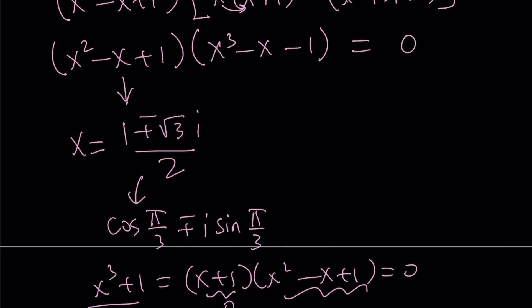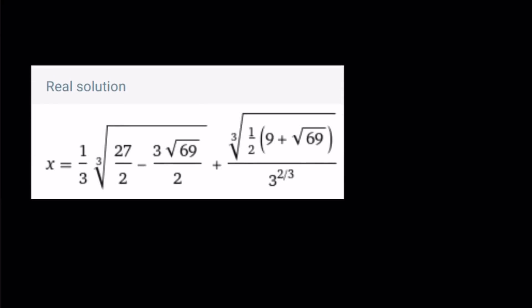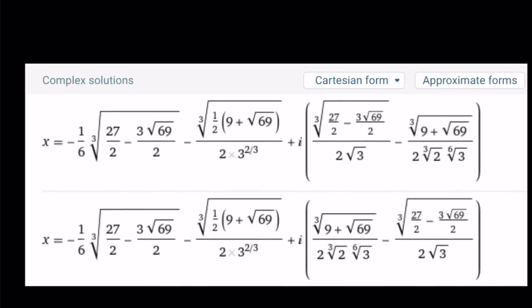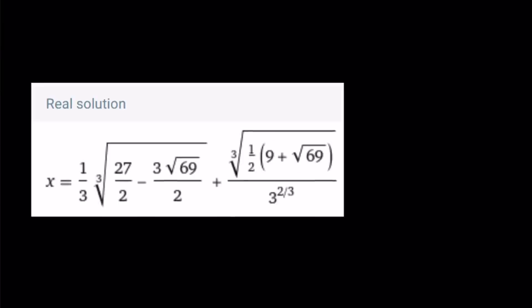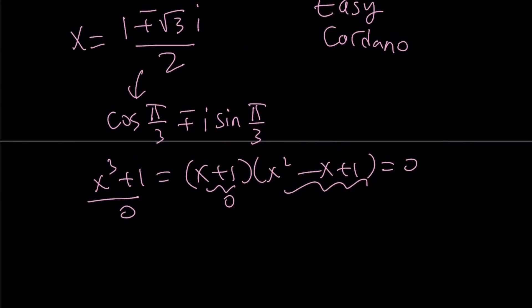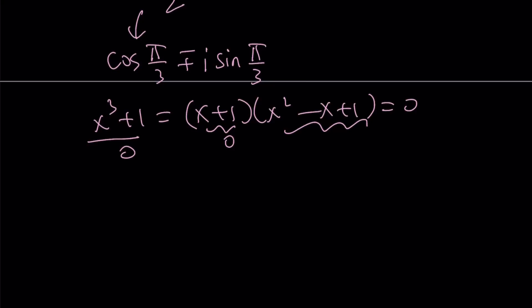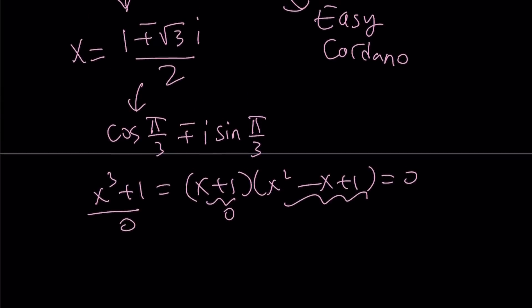For the cubic x cubed minus x minus one, you can apply Cardano's formula. The cubic has one real solution and two complex solutions. Thanks to Wolfram Alpha, I was able to pull those solutions — they look amazing. Even if you apply Cardano's formula directly, you can solve it. I'm planning to make a separate video on that.